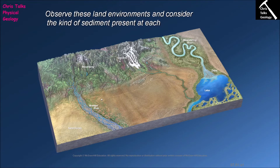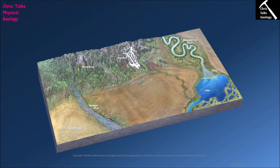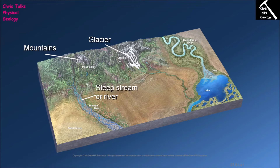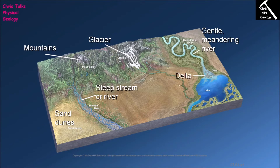Looking at the diagram, you can see an image of the surface of the Earth listing some of the main depositional environments present on the continents. The types of environments we're looking at include mountainous areas, areas affected by glaciers, areas affected by steep streams or rivers going down quite a steep gradient, sand dunes in desert environments, gentle meandering rivers, deltas, and lakes.